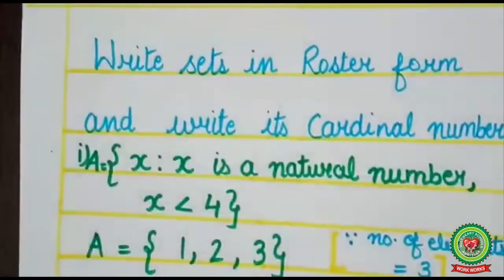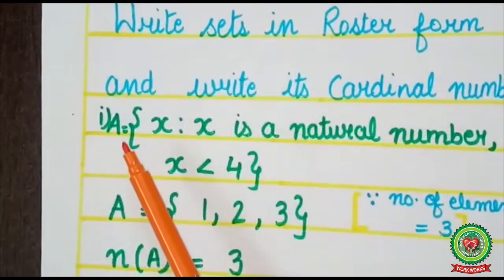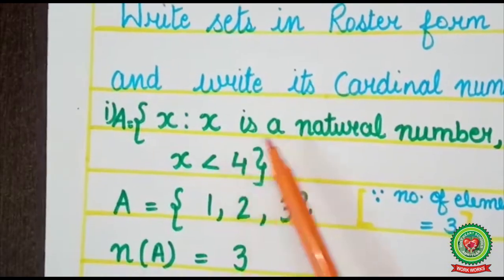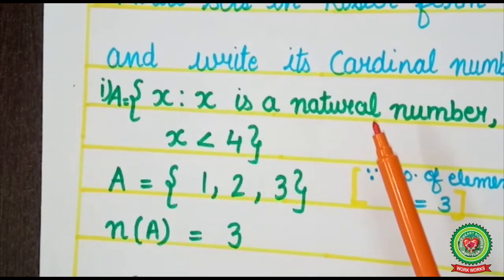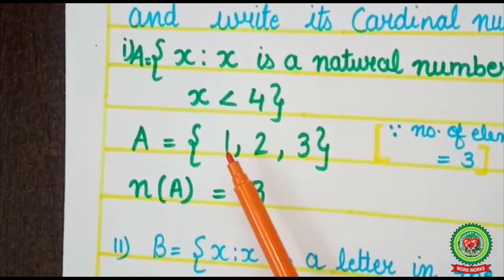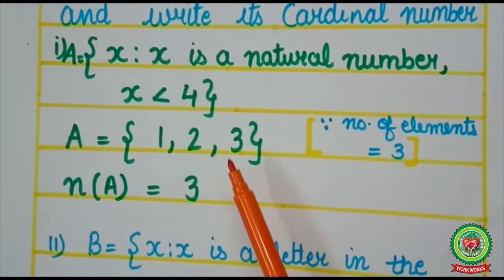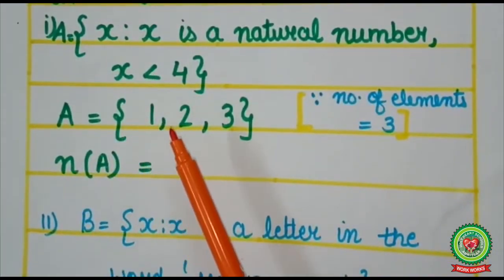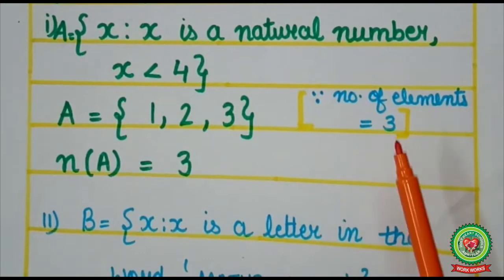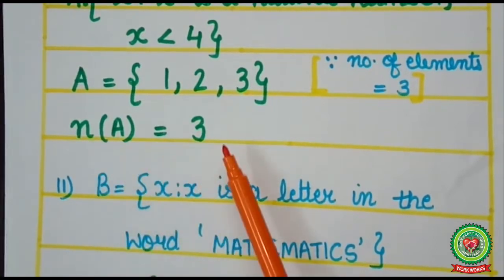Now let's find the cardinal number of sets given in set builder form. Our first step is to change it into roster form. Set A = {x such that x is a natural number and x < 4}. Natural numbers start from 1, so in roster form: 1, 2, 3 — we write till 3 only because we need numbers less than 4. The number of elements in set A are 3, so n(A) = 3.